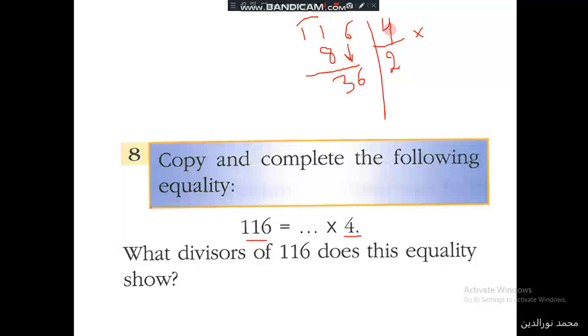36 divided by 4 is 9. 9 times 4 is 36, and the remainder is 0. So 4 is a divisor of 116.